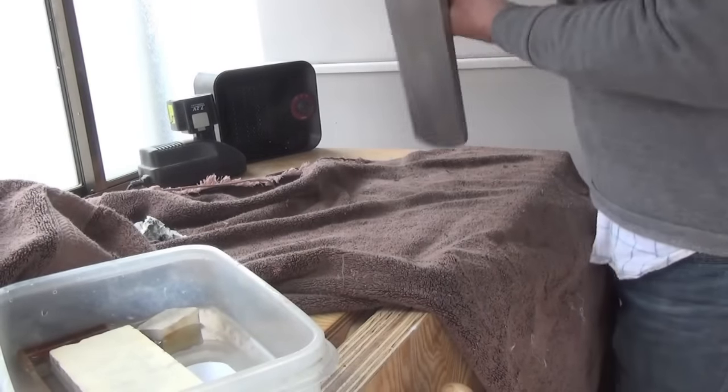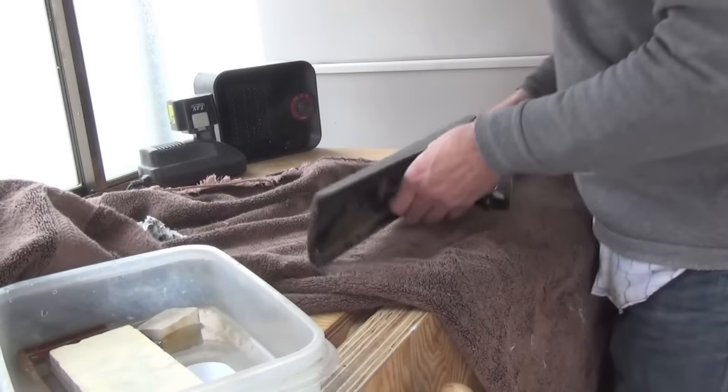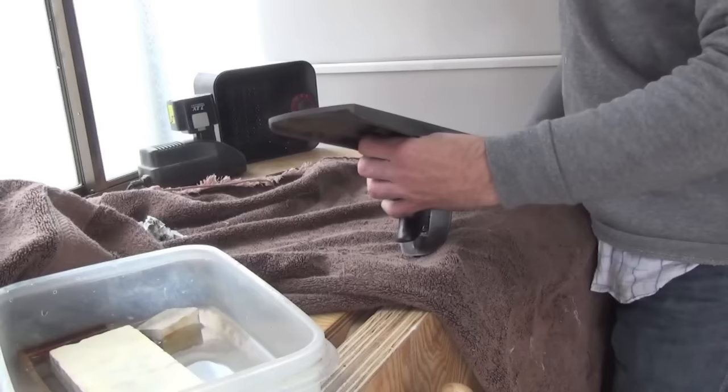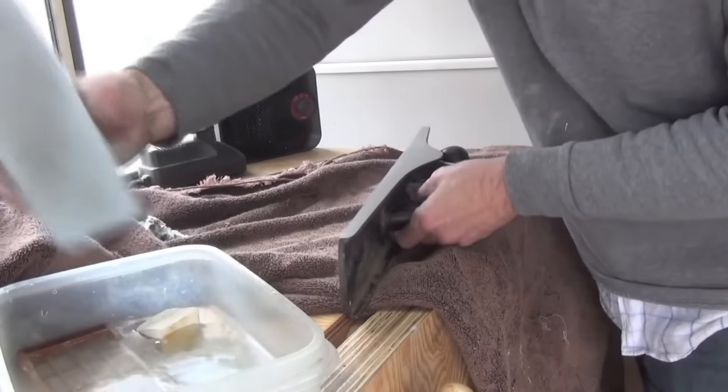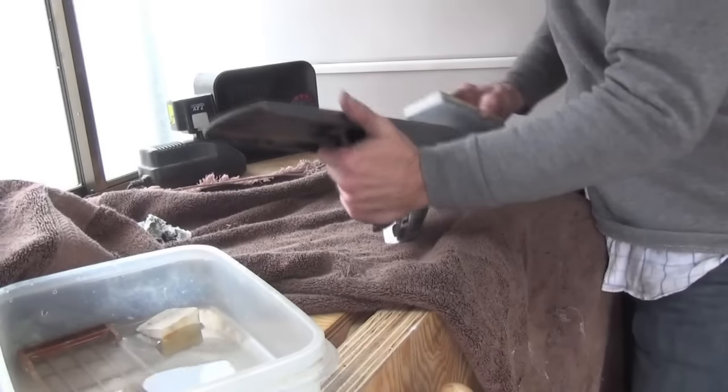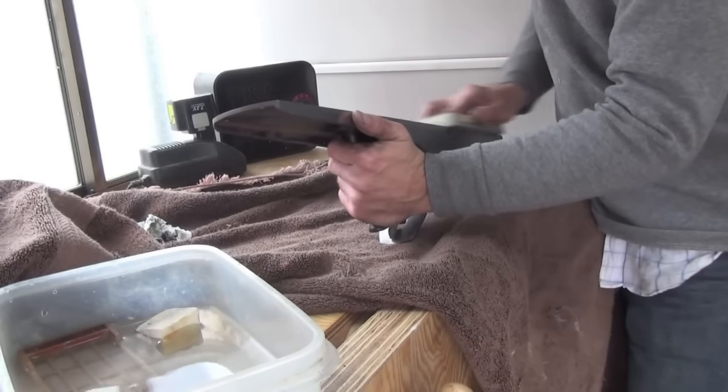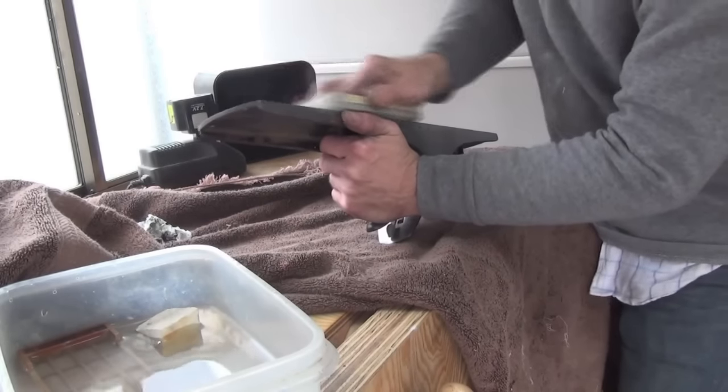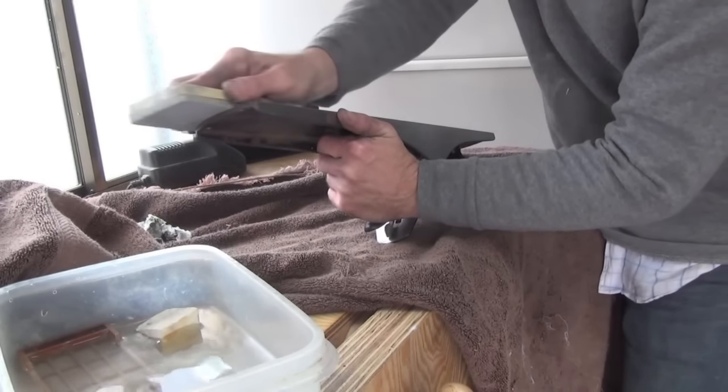Now with everything flat, I'm going to go in and just clean things up a bit using Japanese water stones. I start with a thousand grit and work that over the sole. These stones have been just flattened moments before doing this, of course. You don't want to do this with cut stones.